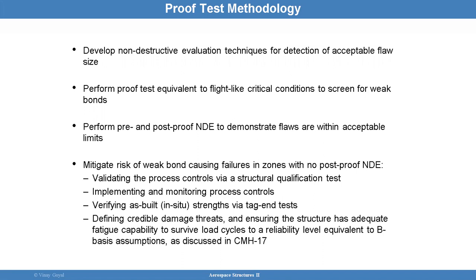You want to perform subsequent tests to validate your models will work with pressure load and combined external loads, and validate through fracture and strength analysis the acceptable flaw sizes. The proof test methodology involves developing NDE techniques to enable rapid detection of acceptable flaw sizes. Perform a proof test afterward and then a post-proof NDE to see if the proof test did anything to the structure. For example, if you have a one-inch flaw and apply a proof test, it's possible that flaw turns into one and a half inches — that needs to be looked at.